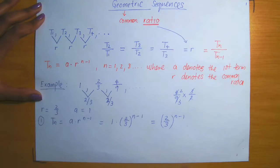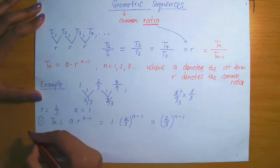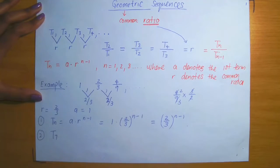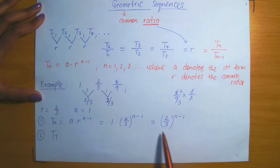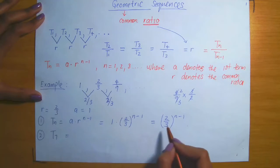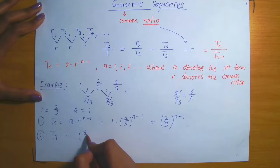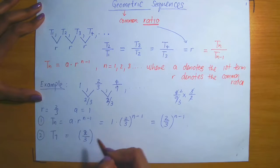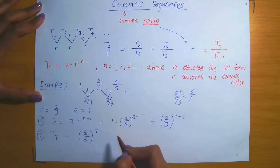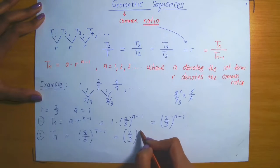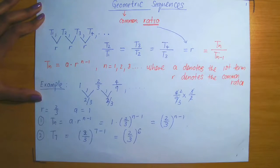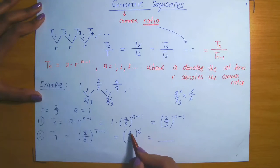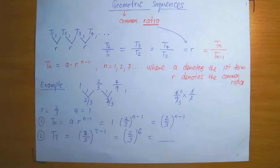Now, let's suppose I ask you to determine the seventh term, t7. How would you determine that? n equals 7. All you'd have to do is substitute n equals 7 into your formula. That means taking (2/3) raised to the power 7 minus 1, which is (2/3) raised to the power 6. You could leave it like that or simplify further by distributing the exponent 6 into the numerator and the denominator.